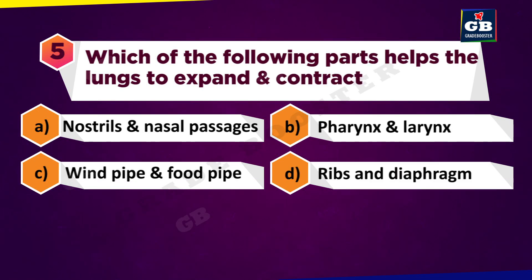Which of the following parts helps the lungs to expand and contract? A. Nostrils and nasal passages, B. Pharynx and larynx, C. Windpipe and food pipe, D. Ribs and diaphragm.